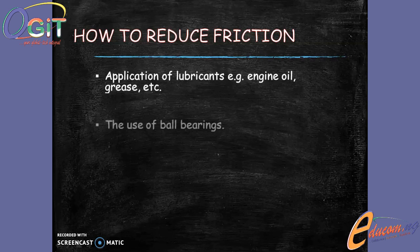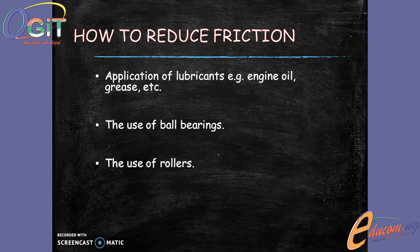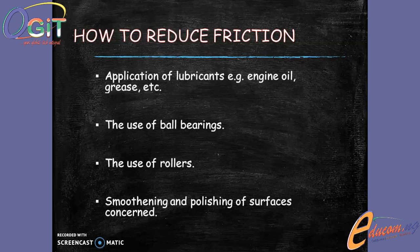Also, we can reduce friction by using ball bearings. Ball bearings are present in our bicycles and grinding machines to reduce friction. Another way of reducing friction is the use of rollers — your chairs and tables sometimes come with rollers, which look like balls and aid in moving items from one place to another. Lastly, smoothing and polishing of surfaces — when you smooth and polish surfaces it helps to reduce friction.